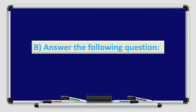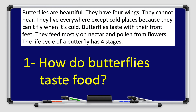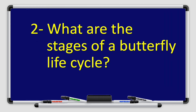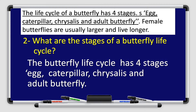Now I want you to answer the following questions. How do butterflies taste food? Go back to the paragraph, read and find the answer. Butterflies taste with their front feet. So the answer is: butterflies taste food with their front feet. Number 3: What are the stages of a butterfly life cycle? The butterfly life cycle has four stages — egg, caterpillar, chrysalis, and adult butterfly.